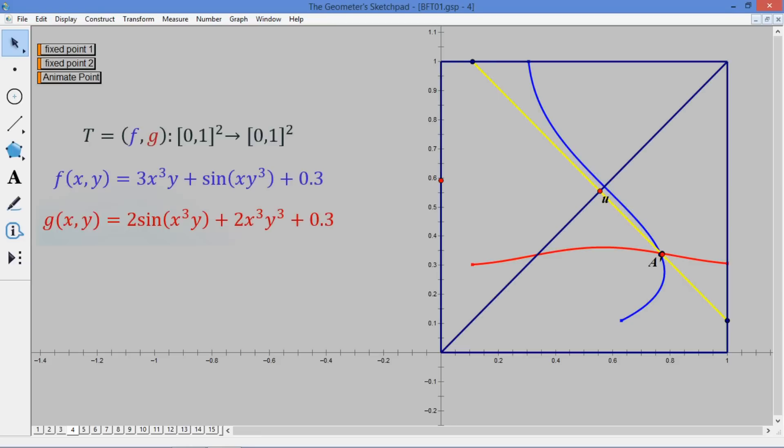Here is an example using GeoGebra to show that the Brouwer Fixed-Point Theorem holds in two-dimensional space. In this example, we give function T, f and g. We animate the point. We will see that the point u moves along the diagonal. And we will see that this function has two fixed points.